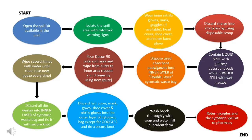To handle a cytotoxic spill: First, open the spill kit available in the unit, then isolate the spill area with a cytotoxic warning sign. Wear inner natural gloves, mask, goggles (if available), followed by head cover, shoe cover, and outer latex glove. Discard sharps into a sharp bin using a disposable scoop. Contain liquid spills with gauzes or absorbent pads, while powder spills should be covered with wet gauzes. Dispose used absorbent pads or gauzes into the inner layer of a double-layer cytotoxic waste bag. Pour CO-90 on the spill area and wipe from outer to inner, repeating two or three times using new gauze.